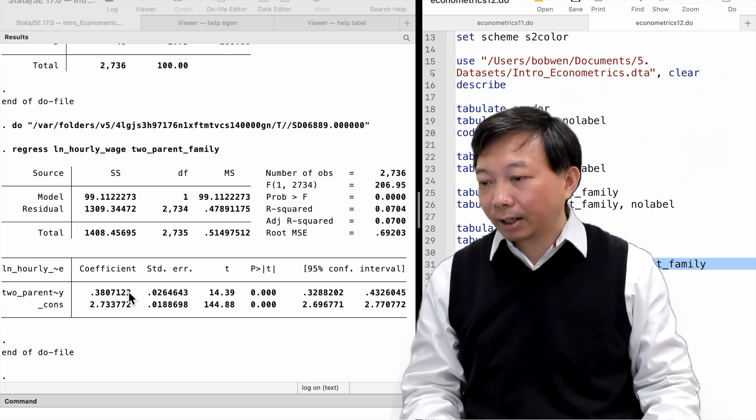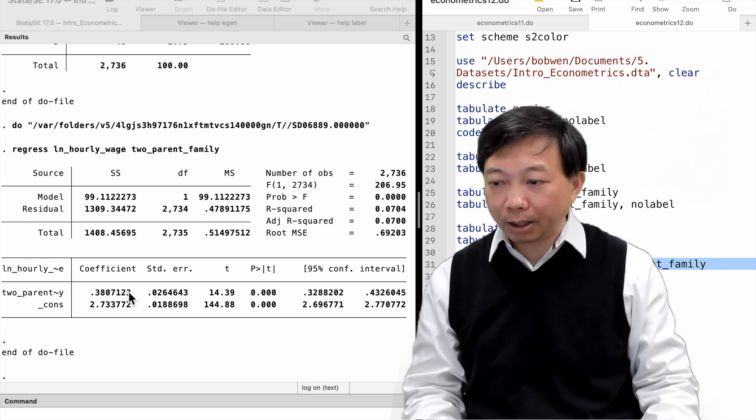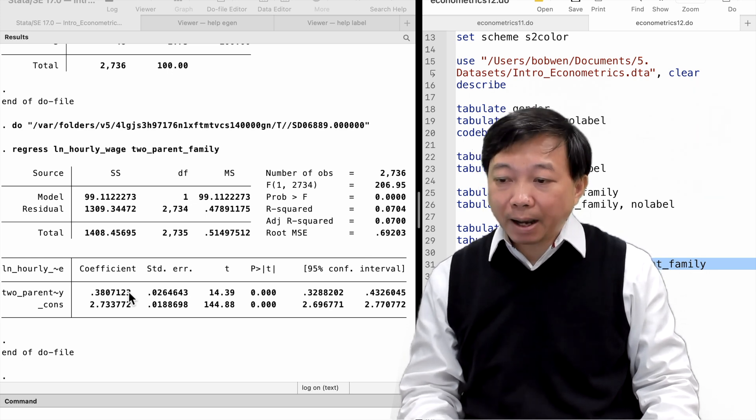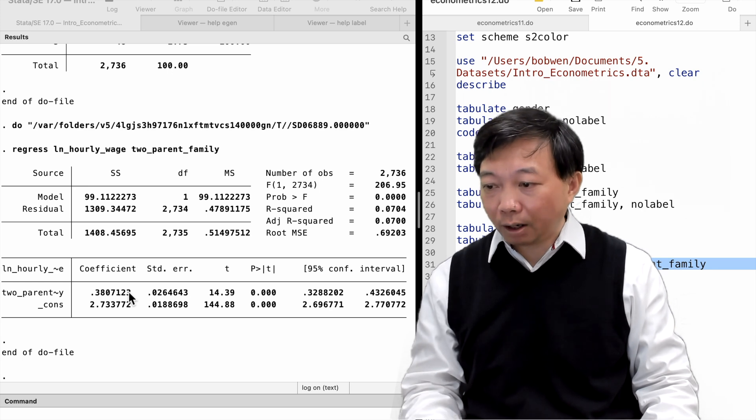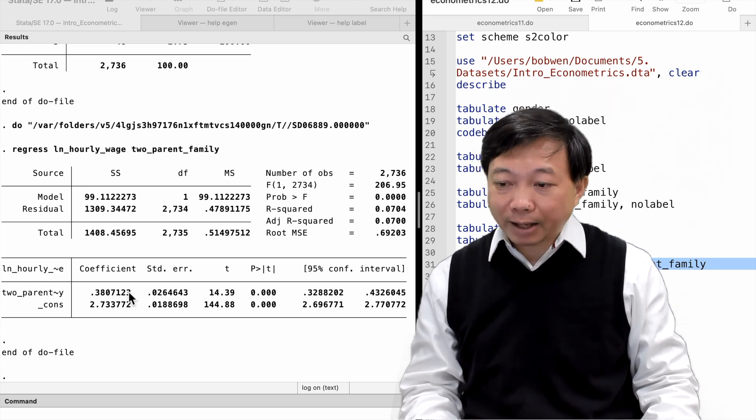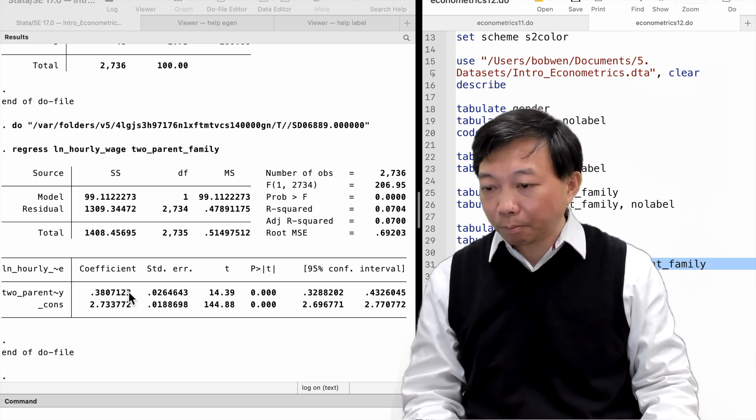But it is not necessarily the causal effect of growing up in a two-parent family on the adult child's earnings because there could be many other factors in the error term that affect hourly wage are also correlated with the childhood family structure. The OLS estimate will be biased if the zero conditional mean assumption fails.